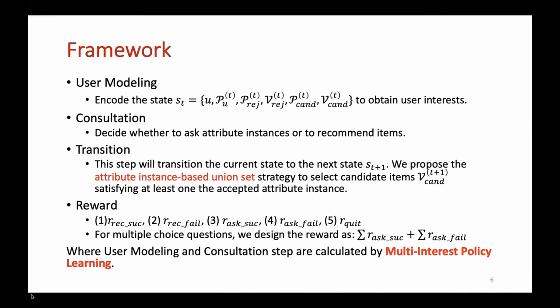Once the system finishes the user modeling step, it will move to the consultation step, with the purpose to decide whether to ask attribute instances or to recommend items. When the user responds to the action of the agent, the transition step will be triggered. Based on user feedback, we update six components of the state. For the candidate items, we propose the attribute instance based union set strategy to select candidate items satisfying at least one accepted attribute instance instead of previous intersection set strategy.